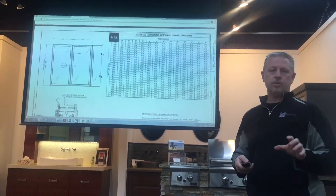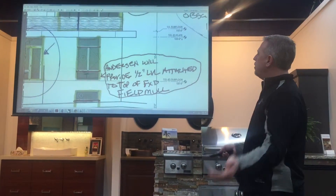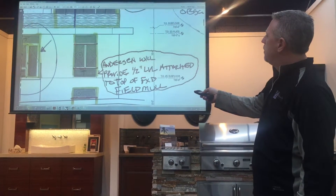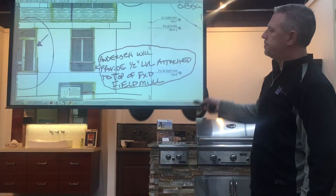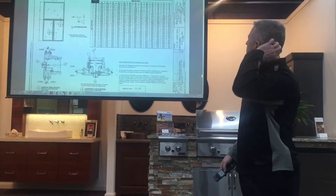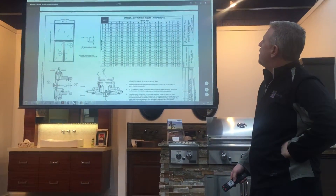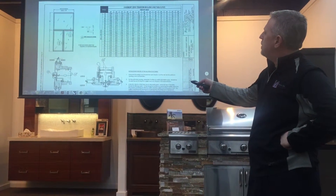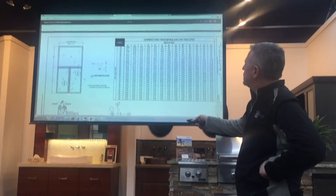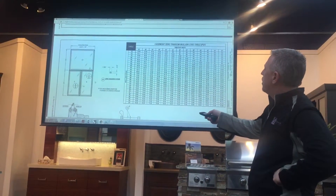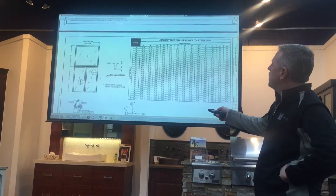But how do we plug that into a configuration where we've got a fixed unit above or below it? There is another engineered report covering T-moles — a T-mole is where you've got two moles coming together. We're going to take us to that T-mole chart back at the Eagle website. Now we see the casement unit is figured as a zero mole, and we're going to look at the horizontal mole and see whether or not it meets spec.